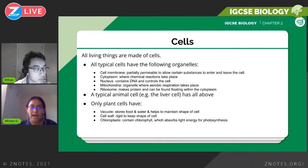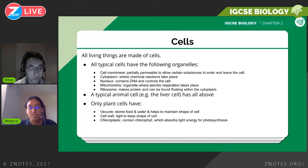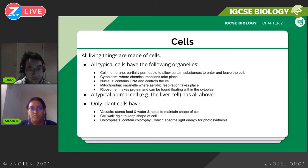Animal cells have the following five cell organelles: cell membrane, cytoplasm, nucleus, mitochondria, and ribosomes. Plant cells also have these, and additionally they have vacuoles, cell walls, and chloroplasts. You need to know the functions of each of these organelles. Cell membranes are essentially a window to the cell — they control what substances enter and leave the cell.